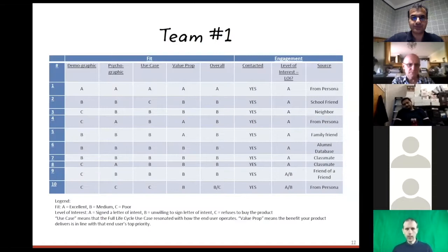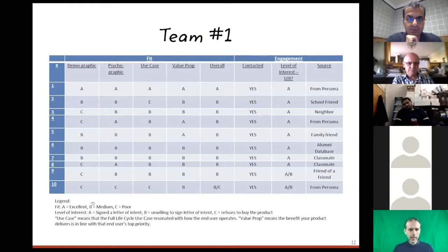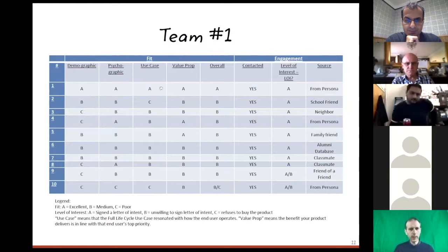This is for one particular team, team one, and you can see that they've got a legend here at the bottom. This is just showing the fit. You can see in terms of the fit ABC, basically excellence, medium and poor with the different aspects. Great demographic fit, great psychographic fit, use case, value proposition and so on.